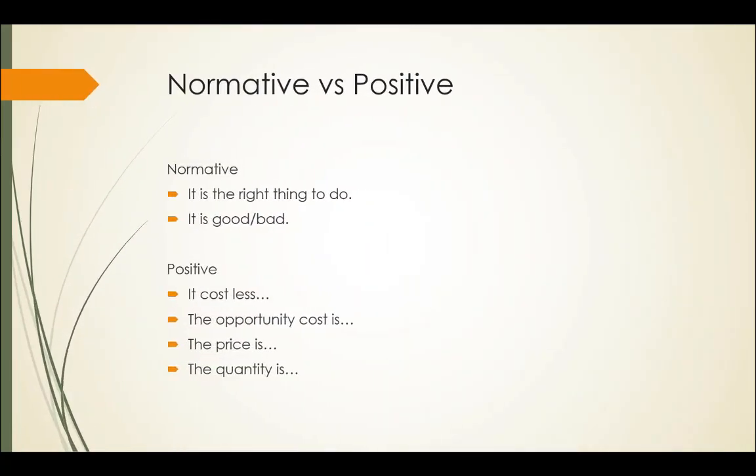Then our fourth paragraph is normative versus positive. And this is just the kind of statements you may give. A lot of people tend to give these when they're doing their blog post. For example, normative type statements is it's the right thing to do or it's good or it's bad. You're making a judgment choice based on subjective material.